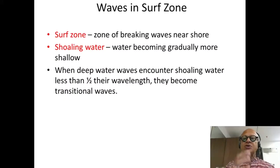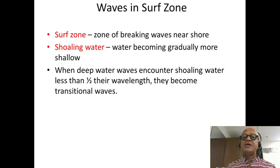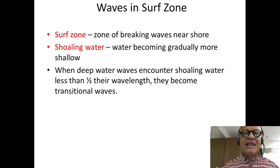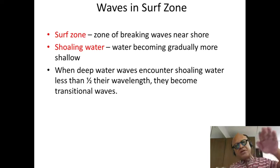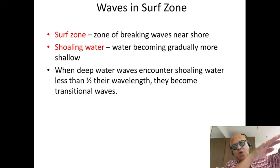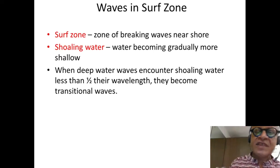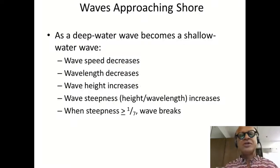We now come towards the coast. We talked about transitional waves and shallow water waves. Shallow water waves happen when waves begin to feel the bottom. This is where we get into the surf zone, where the waves begin to break and produce surf. The critical ingredient is that the water is shoaling — the bottom is coming up because you are on the beach, so water depth gets shallower and shallower. When deep water waves encounter shoaling water less than half their wavelength, they transition into transitional waves.